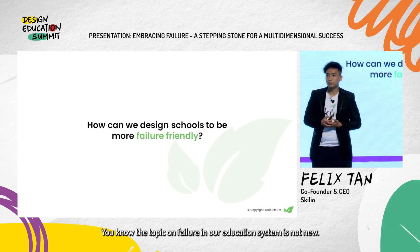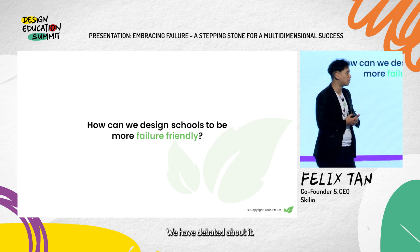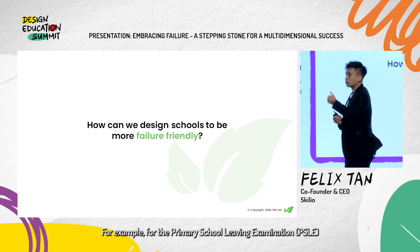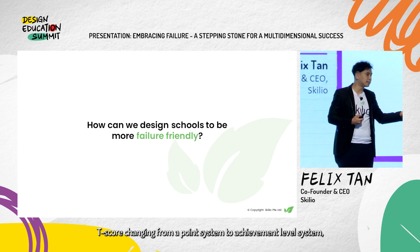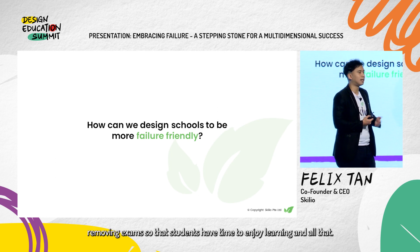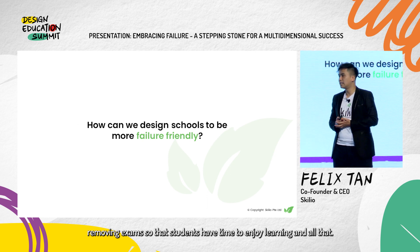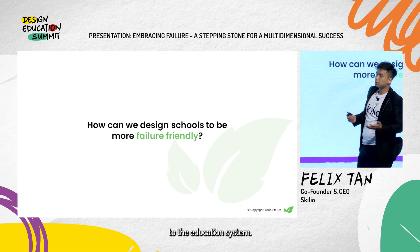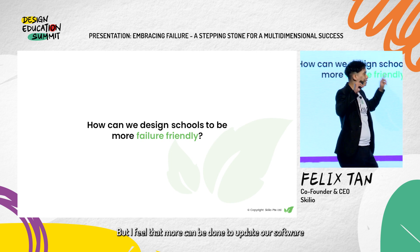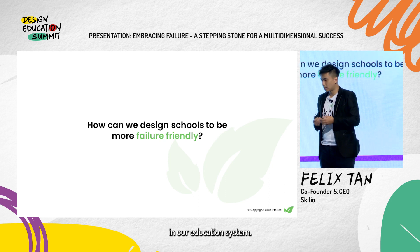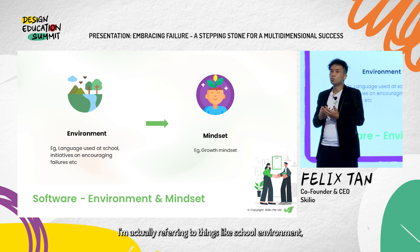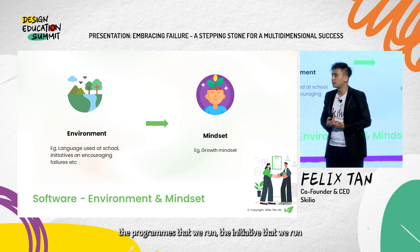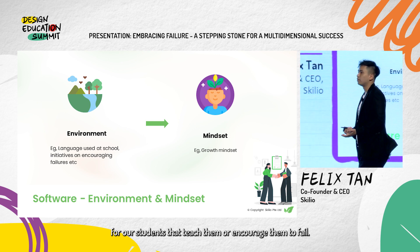The topic of failure in our education system is not new. We have talked about it, debated about it, and it's good to see some structural adjustments in the last few years — for example, the PSLE T-score changing from a point system to an achievement level system, and removing exams so that students have time to enjoy learning. I believe these structural changes are great hardware changes to the education system, but I feel that more can be done to update our software — things like school environment, the language we use when we interact with students, the programs and initiatives we run that encourage them to fail.